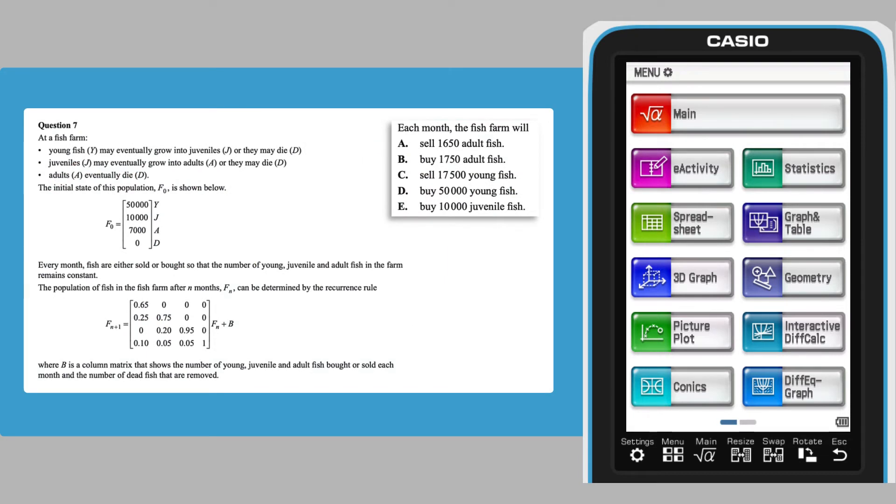At first glance it seems like there is insufficient evidence to calculate matrix B which consists of the number of each type of fish bought and sold each month.